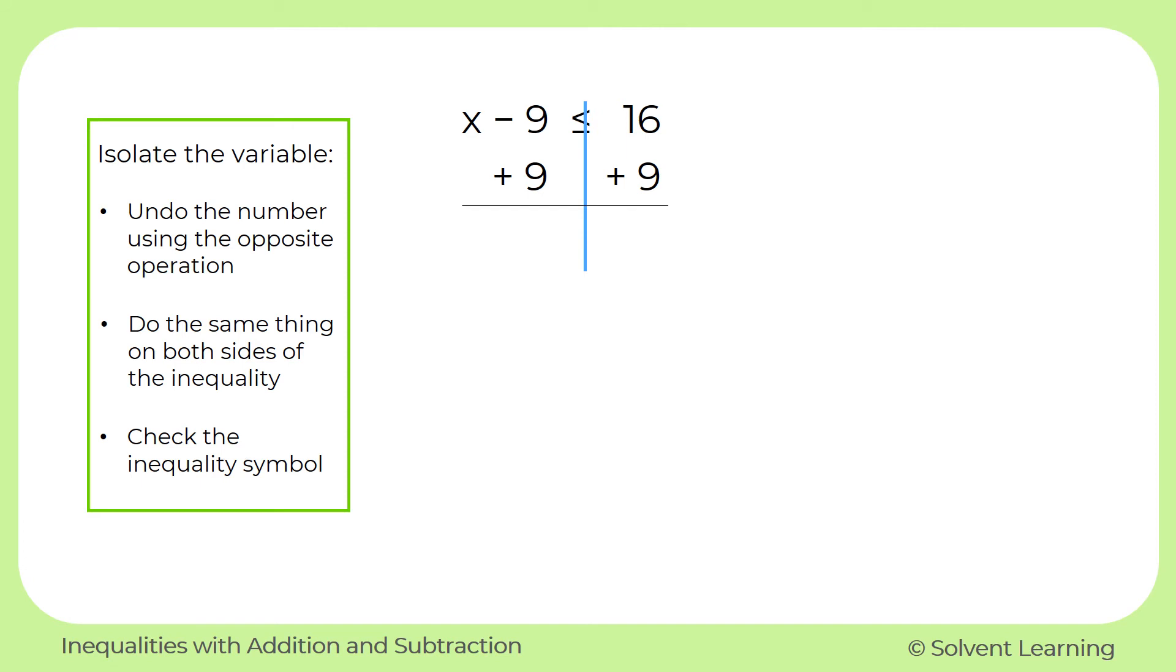Now we'll simplify this to see what we're left with. On the left, minus 9 and plus 9 will cancel each other out. And we'll have x by itself. And on the right side, 16 plus 9 simplifies to 25. And then we'll bring down our inequality symbol in the middle. So our solution is x less than or equal to 25.